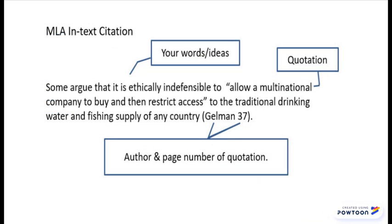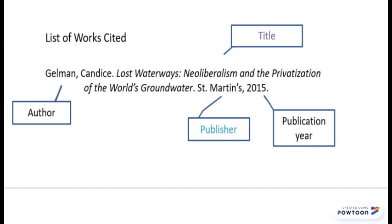For example, this is an in-text citation for a print book in MLA style. An MLA in-text citation consists of the author's last name and a page reference, unless you reference more than one book by the same author. The list of works cited contains more information and is formatted as you see here, with the title italicized and the second line indented.